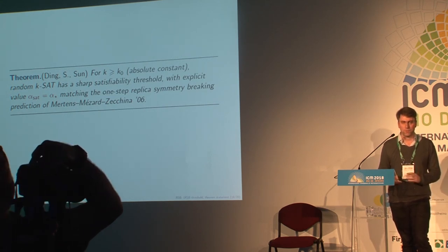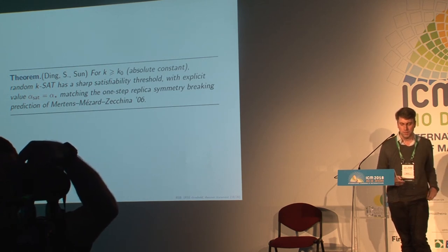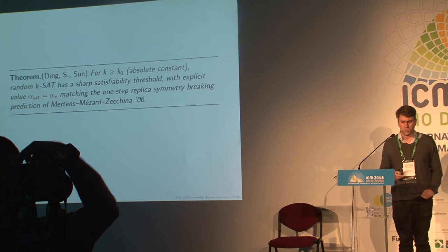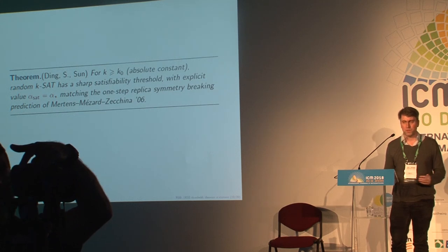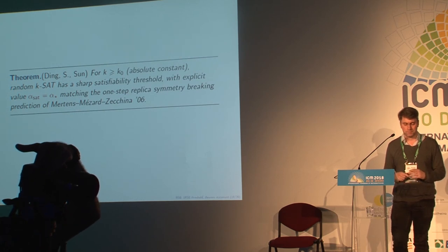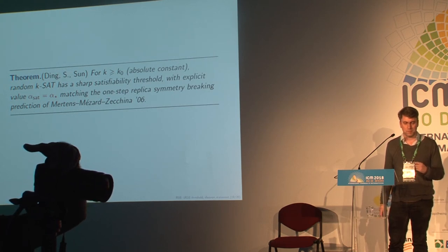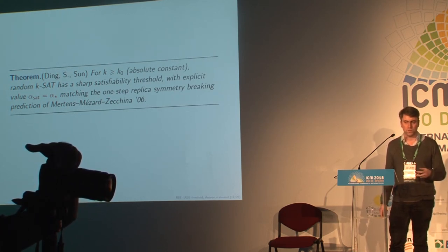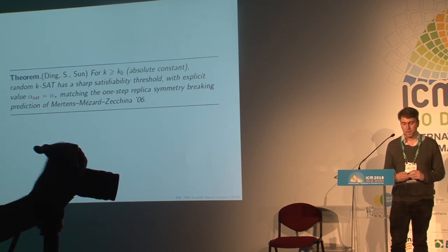The proof uses the second moment method, and it's really guided by the heuristics I just talked about — in particular, the marginal probabilities of variables are really determined by their local neighborhood, and that's done in a way predicted by the cavity method.